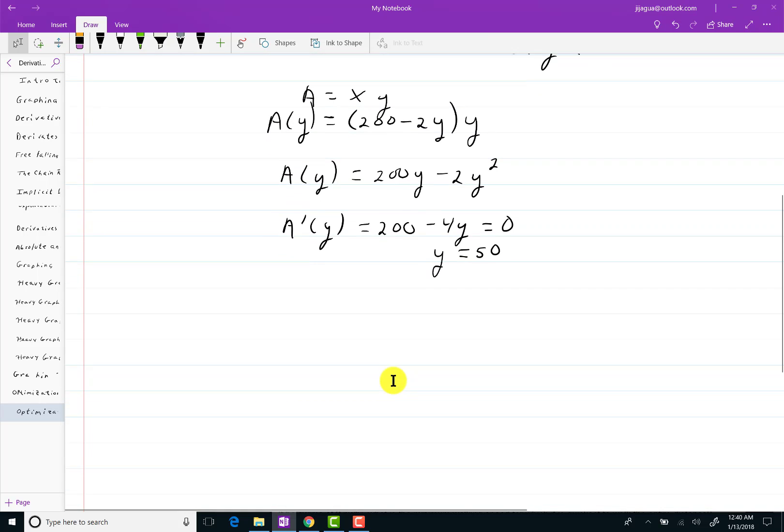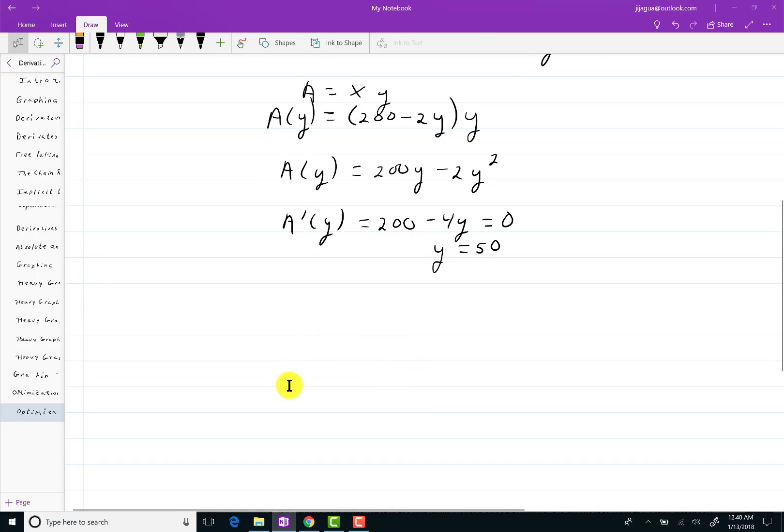Now let's go ahead and check. A(0) = 0. A(100) = 0. A(50) equals. So if I replace y with 50, I'll get 100 times 50, which will be 5,000. You should know that that means meters squared.